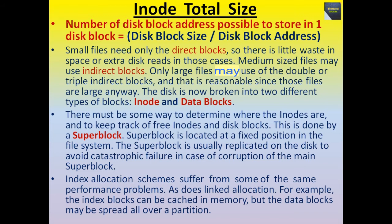Index allocation schemes suffer from some of the same performance problems as linked allocation. For example, the index blocks can be cached in memory but the data blocks may be spread all over a partition. An inode is a data structure that stores various information about a file in Linux such as the access mode, read, write, execute permissions, ownership, file type, file size, group, number of links, etc. Each inode is identified by an integer number and is assigned to a file when it is created. An inode, short for index node, is a data structure Linux uses to store information about a file. Each inode has a unique ID that identifies an individual file or other object in the Linux system.